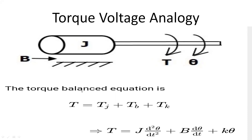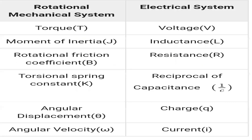Comparing the rotational mechanical system with the translational mechanical system analogy, we get: torque is analogous to voltage, moment of inertia J is analogous to inductance, rotational frictional coefficient is analogous to resistance, torsional spring constant is analogous to reciprocal of capacitance, angular displacement theta is analogous to charge, and angular velocity omega is analogous to current.